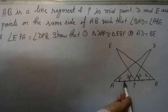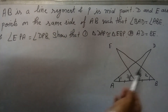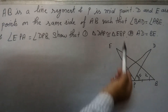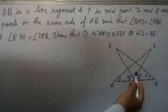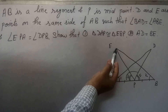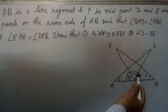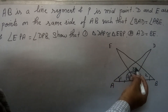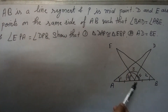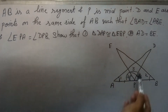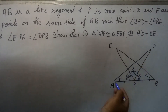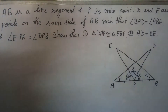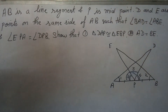Angle 3 equals angle 4, and AP equals PB. We need to find that triangles DAP and EBP are congruent. For triangle DPA we need this complete angle, and for triangle EPB we need this complete angle. There is a common angle — let this be angle 5 — shared by both triangles. If we add angle 3 and angle 4 to angle 5, the complete angles DPA and EPB will be equal. We will solve by this method, adding angle 5 to both sides.